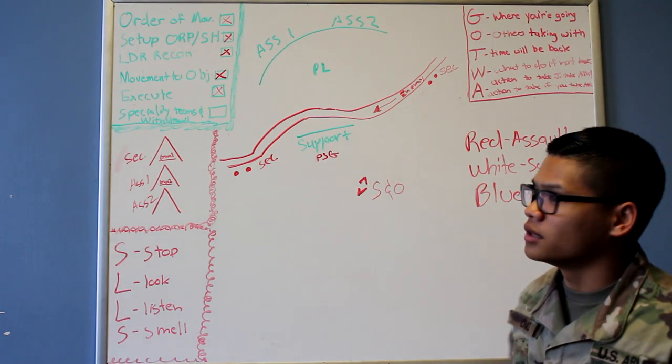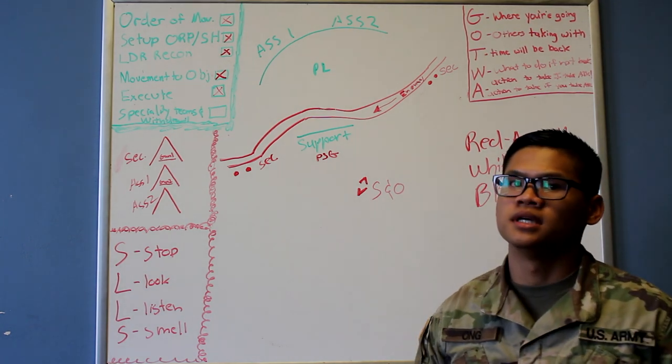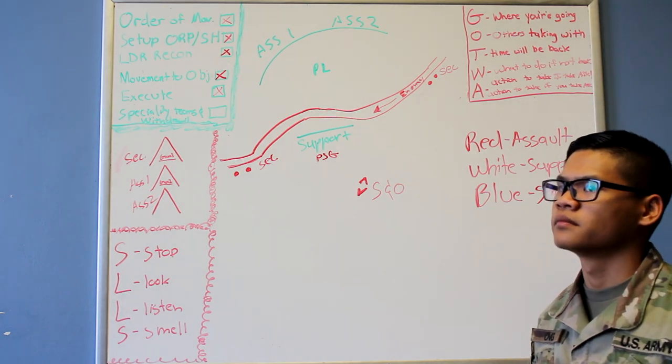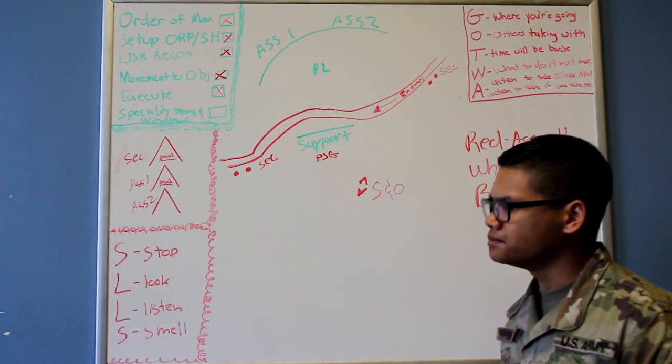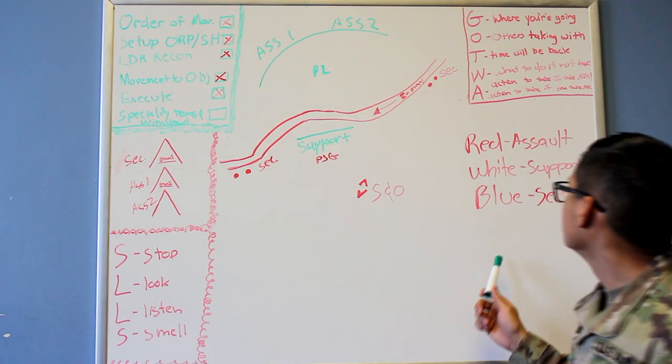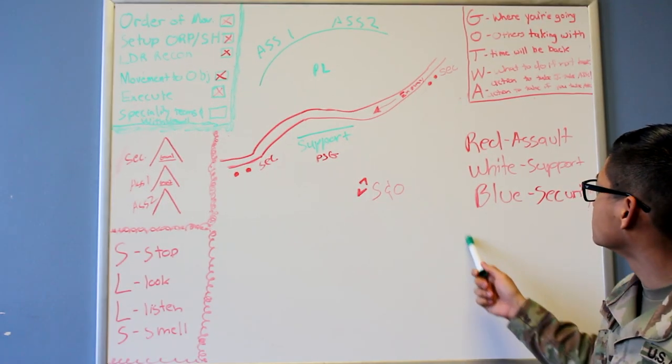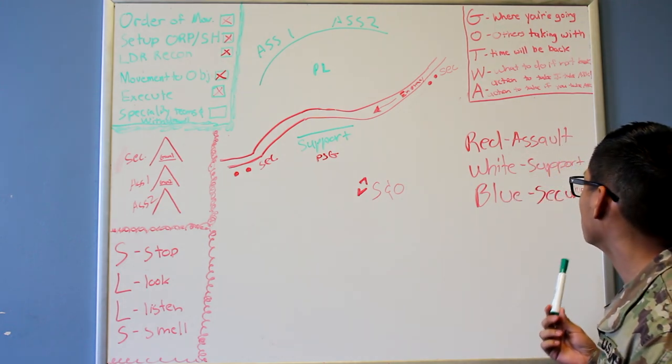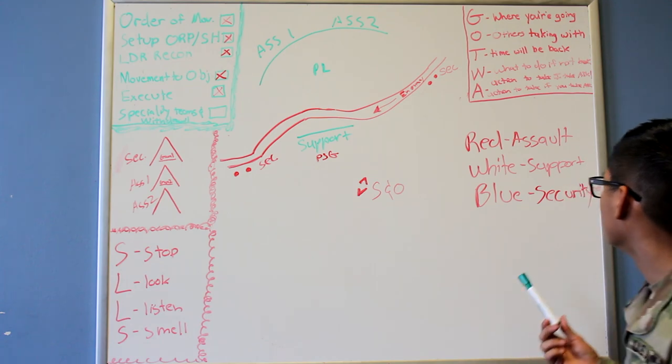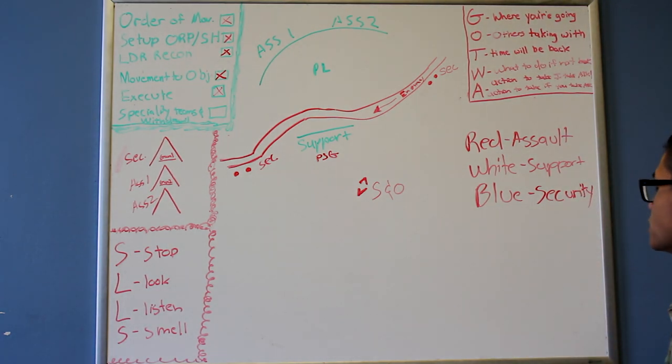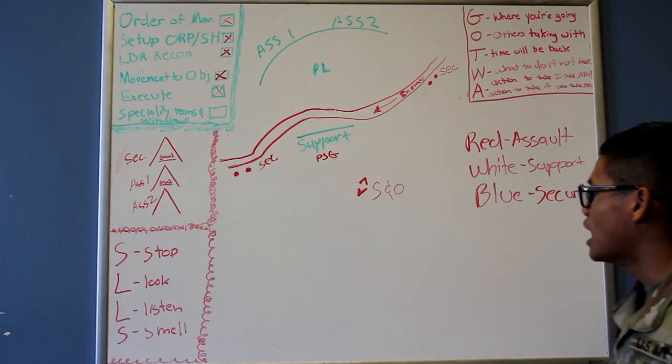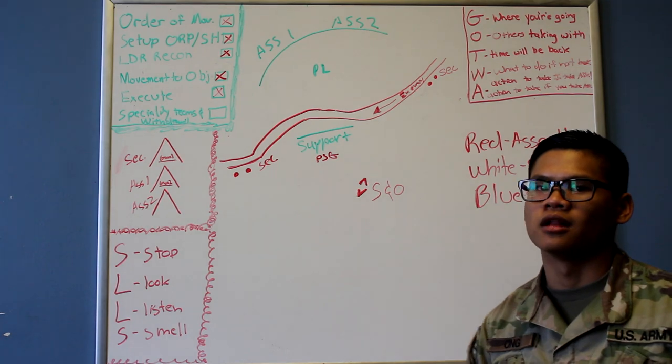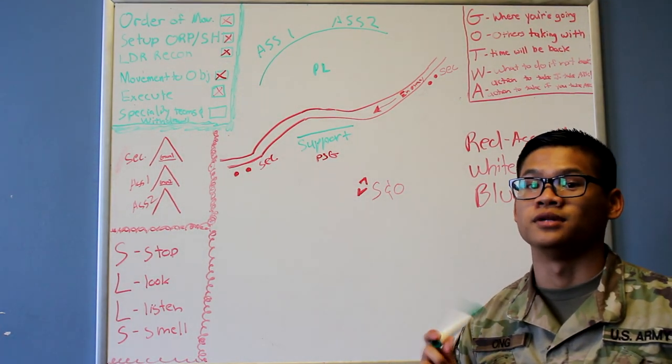Once that limit of advance has been reached and 360 has been secured, the PL will then initiate specialty teams. He's going to first call up EPW. Once EPW is cleared, he's going to call Aid and Litter. After Aid and Litter is cleared, he's going to call up his demo team. From there, you need to know their withdrawal plans. Withdrawal plans will be red. When the PL calls red, assaulting element will all step off. After that, white will be the support element and blue for security. After that, they're going to all step off back to the ORP and then reconsolidate and call up their SITREP. And that will be platoon ambush.